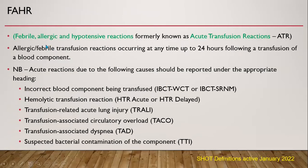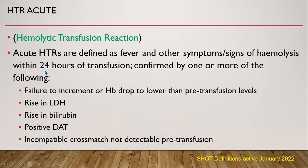Febrile, allergic, and hypotensive reactions, formerly known as acute transfusion reactions, include allergic and febrile transfusion reactions occurring at any time up to 24 hours. Acute hemolytic transfusion reactions are defined as fever and other symptoms or signs of hemolysis within 24 hours of transfusion, confirmed by one or more of the following: failure to increment in Hb or drop in Hb to lower than pre-transfusion levels, rise in serum LDH, rise in serum bilirubin, positive direct Coombs test, or incompatible cross-match not detectable pre-transfusion.